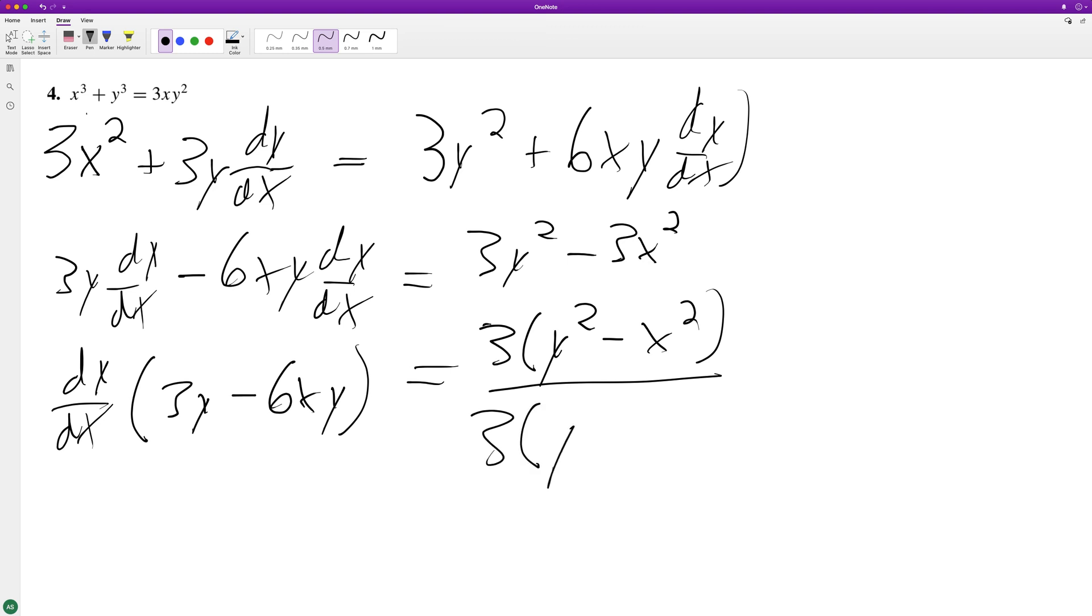So we end up with y minus 2xy. These go and we get dy dx is equal to y squared minus x squared over y minus 2xy.